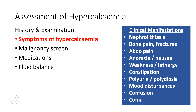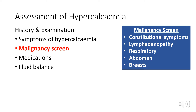When assessing hypercalcemia, start by determining if someone is symptomatic. The mnemonic 'stones, bones, groans, moans, psychiatric overtones' covers the clinical manifestations: renal colic, bone pain and fractures, abdominal pain, nausea, vomiting, constipation, polyuria and polydipsia — because hypercalcemia can induce nephrogenic diabetes insipidus, making the kidney unresponsive to ADH — and psychiatric disturbances including psychosis, mood changes, confusion, and even coma.